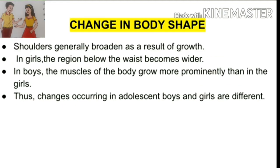The next change is in the body shape. Shoulders generally broaden as a result of growth. In girls, the region below the waist becomes wider, and the development of breasts also begins during puberty. In boys, the body muscles grow more prominently than in girls. Thus, changes occurring in adolescent boys and girls are different. In girls, the hips gain weight and the pelvic region becomes wider.